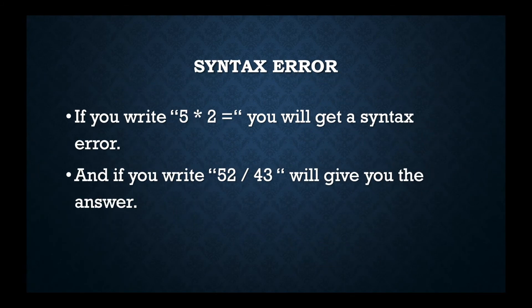Syntax error. If you write 5 multiplied by 2 equal, you will get a syntax error. And if you write 52 divided by 43, it will give you the answer. In Python, if you write like 43 divided by 55 without the equal sign, it will give you the answer. But if you write 5 multiplied by 2 equal, it will give you a syntax error.